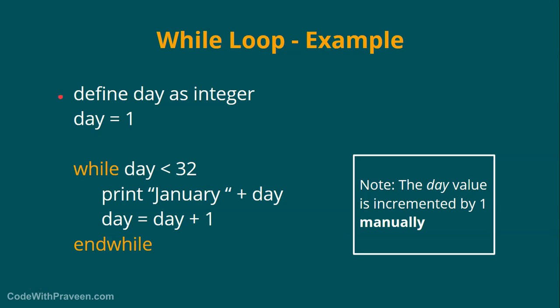Again we define the day as integer. We assign to 1 and now we enter the while loop. Here as you can see the condition is day less than 32 is our condition. So until this condition is met then these statements are getting executed. So in our case initially the day is 1. So it comes here. If you see the condition 1 is less than 32, yes. So this statement executes print January 1. Then we increment the day variable. Again it continues.